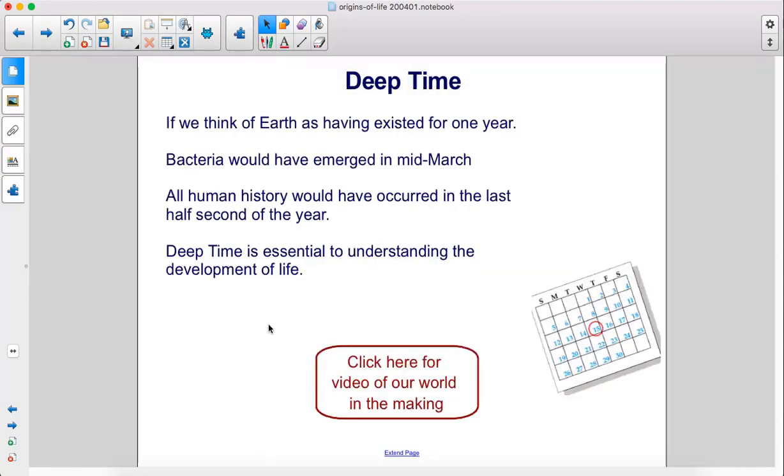If we think of Earth as having existed for one year, bacteria would have emerged in mid-March. All human history would have occurred in the last half second of the year. Deep time is essential to understanding the development of life.